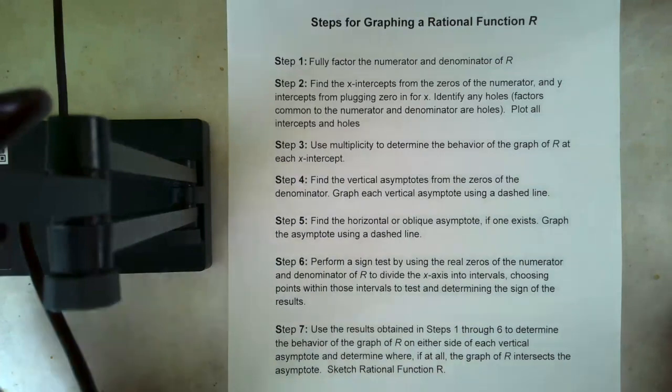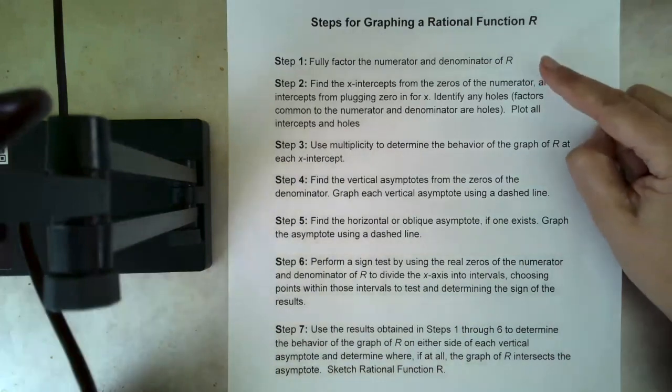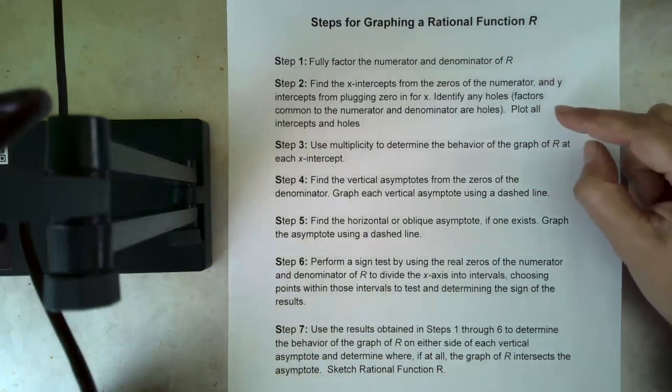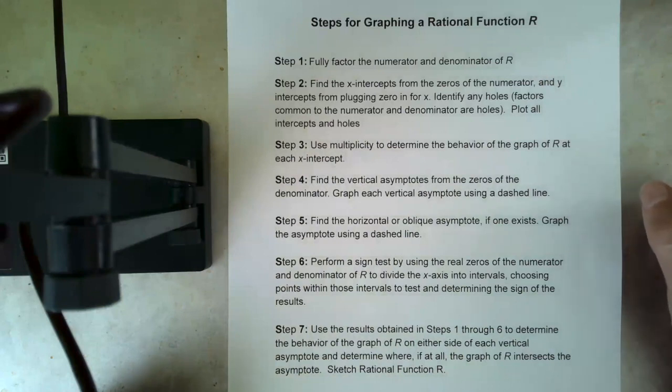Okay, first let's just remind ourselves of our process. We are graphing rational functions. We fully factored. We found the x-intercepts, the y-intercepts, and the zeros. And now we are at step three: use multiplicity to determine the behavior of the graph at each x-intercept.